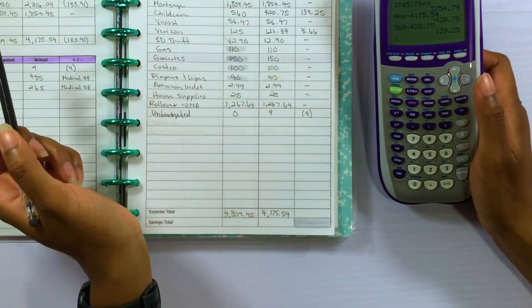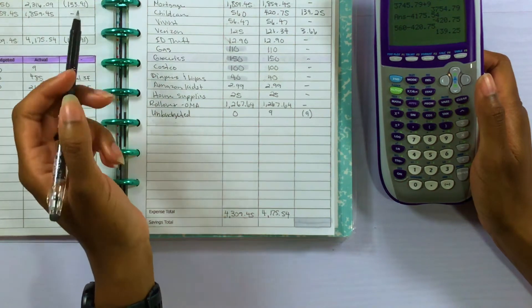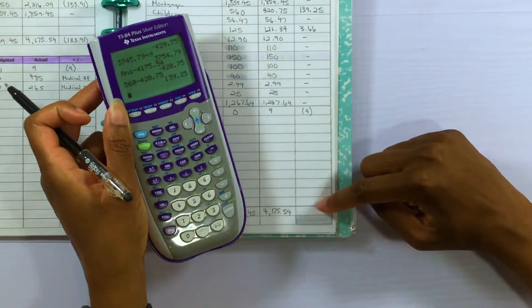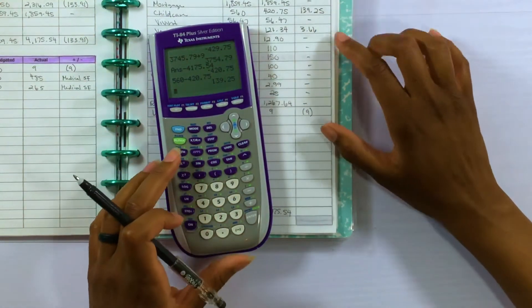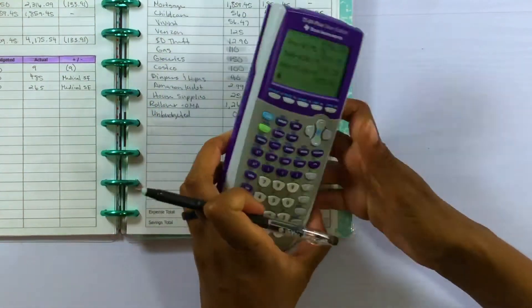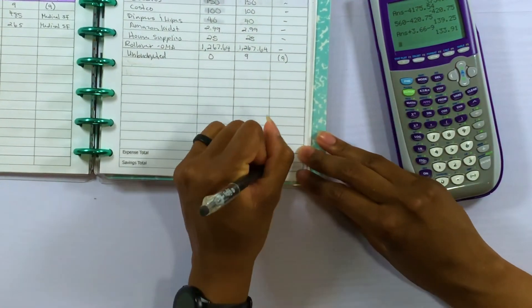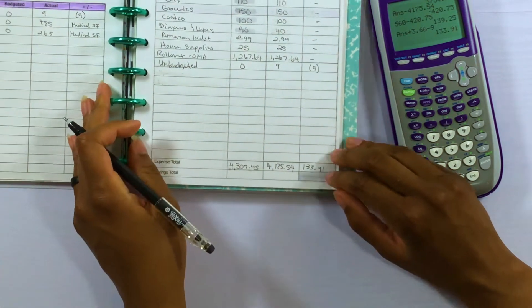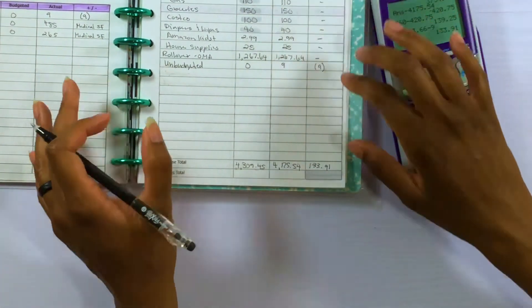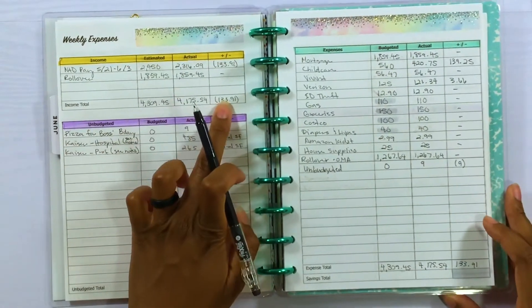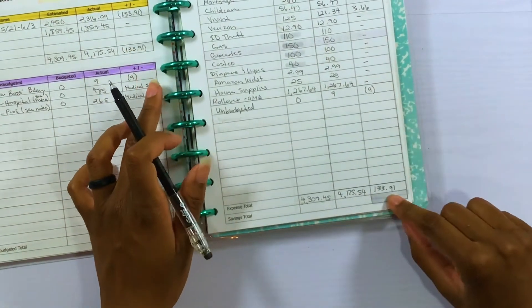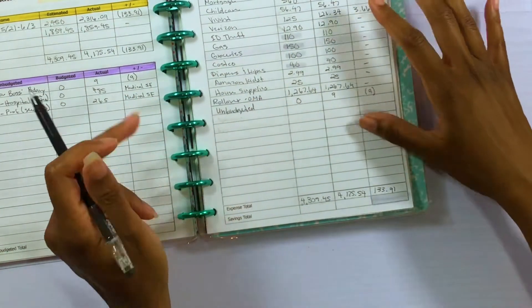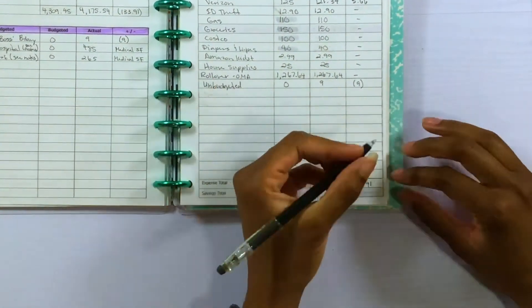Let's see, $139, $366. So now I'm going to add up all of these differences for the expenses. So the total is $133.91 is what the difference is in the expenses. So the $133.91 that we were short and the $133.91 that we were able to save in expenses nets out, so that we weren't over budget.